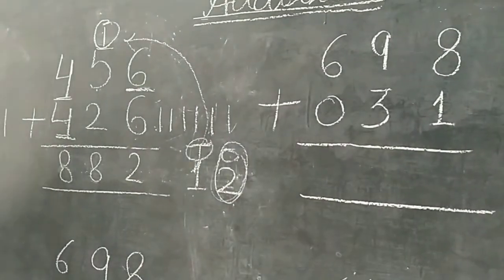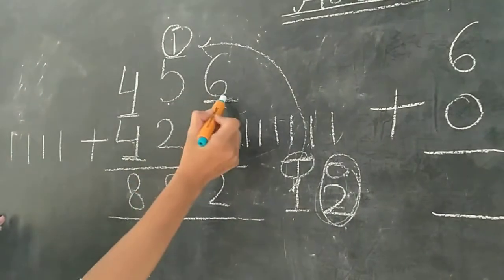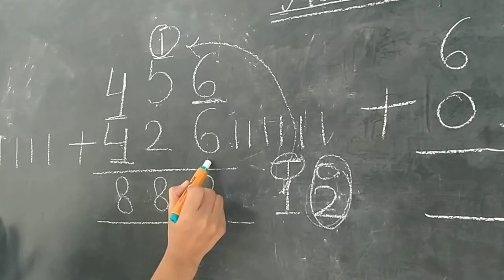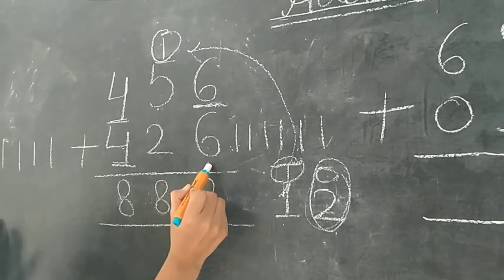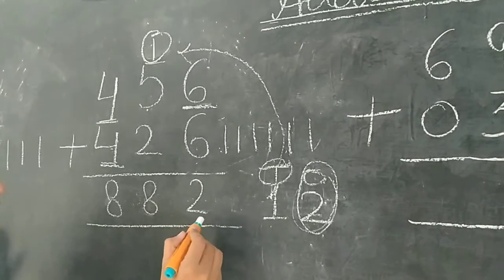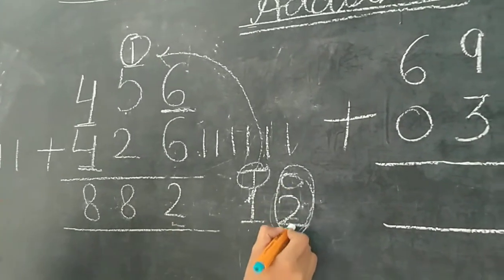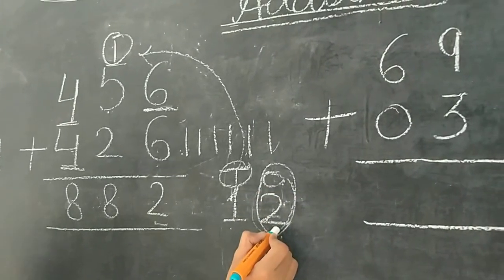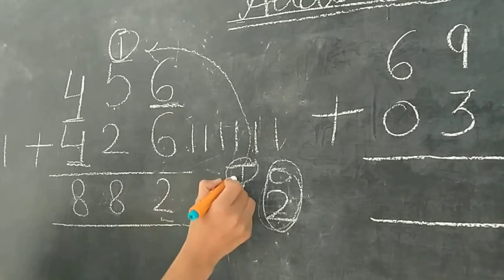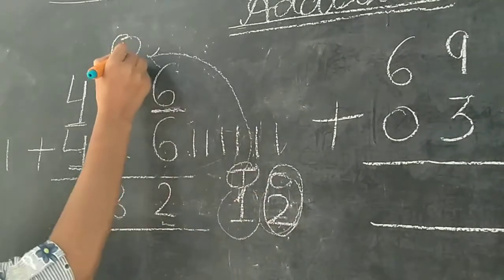Now I explain again. 6 mein aapko 6 add karna hai. 6 plus 6 is equal to 12. But we can't write here 12 poora — we only write 1 digit, so we write the 1s digit. 1s mein aa rahi 2, so we write here 2. And 10s is our carry, so we write here 1 as a carry.